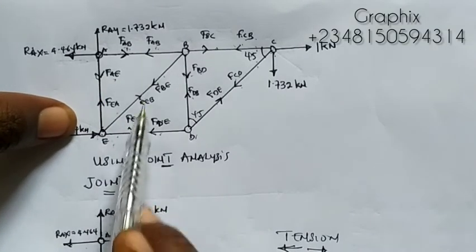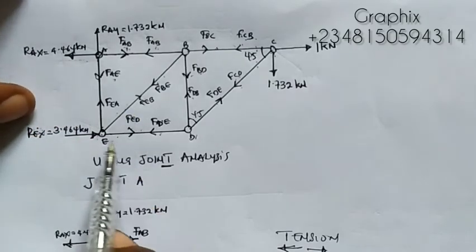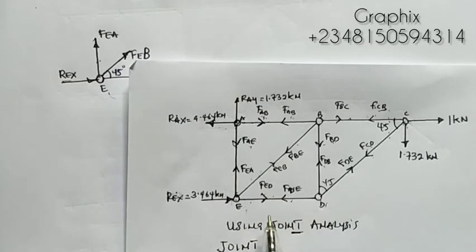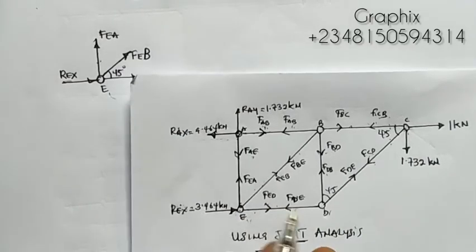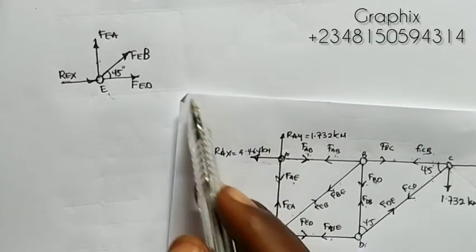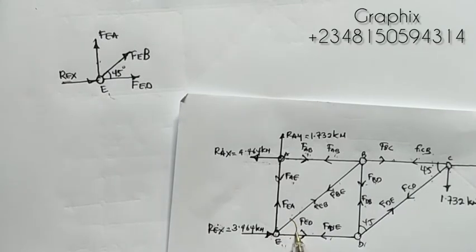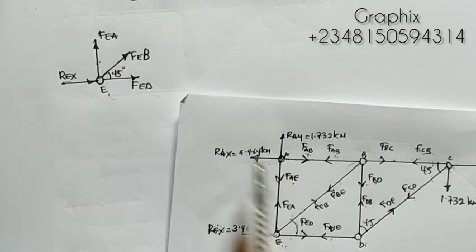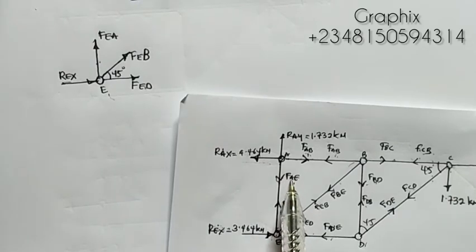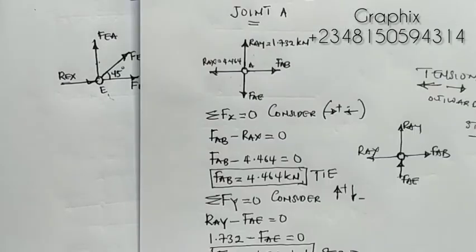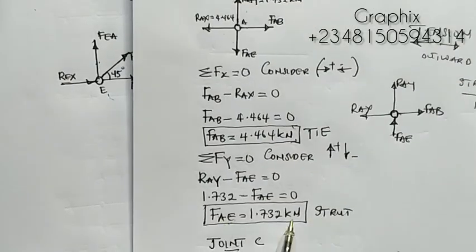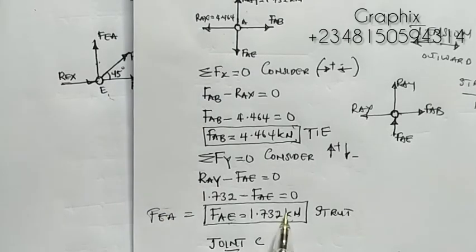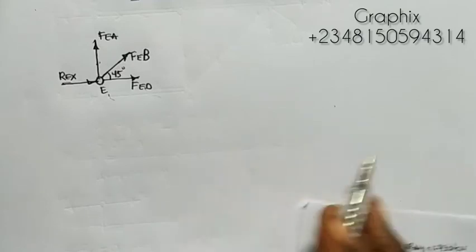Moving to joint E. Initially it had three unknowns, but we have already found F_AE (which equals F_EA equals 1.732 kilonewtons). So joint E now has only two unknowns: F_ED and F_EB. Drawing joint E: R_Ex equals 3.464 kilonewtons facing forward, F_EA equals 1.732 kilonewtons upward, F_ED horizontal, and F_EB inclined at 45 degrees.